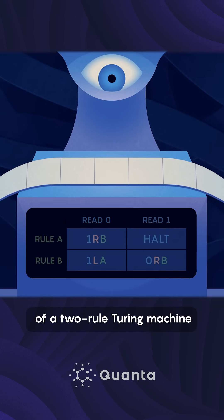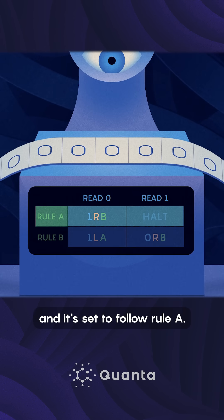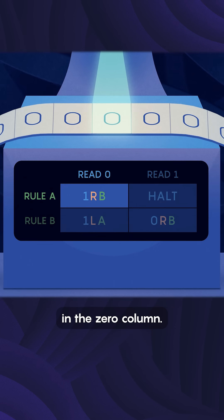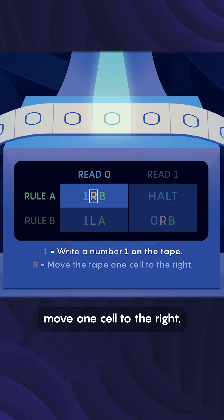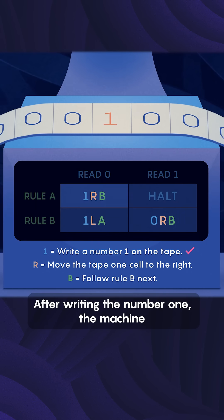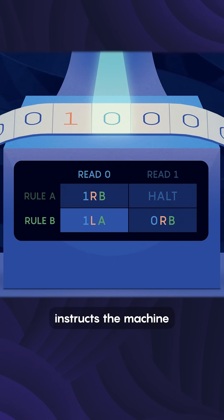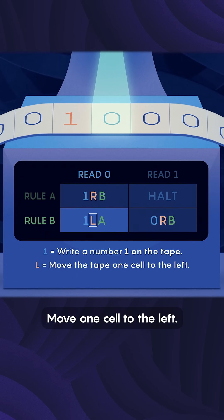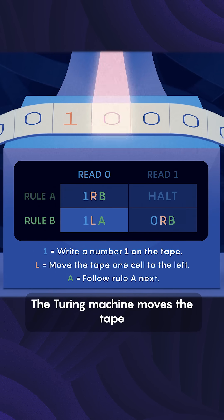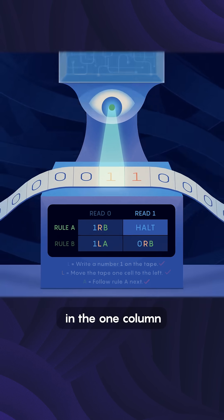Here's an example of a two-rule Turing machine that halts. At the onset, all cells on the tape are set to zero, and it's set to follow rule A. The head reads the tape and encounters a zero. The machine then looks up the rule in the zero column. The instructions say to write the number one, move one cell to the right, and the next rule to follow is rule B. After writing the number one, the machine moves the tape a cell to the right and encounters another zero. The zero column in rule B instructs the machine to write a number one, move one cell to the left, and the next rule to follow is rule A. The Turing machine moves the tape a cell to the left and this time encounters the one. The rule A instructions in the one column tell it to halt.